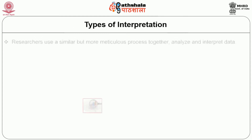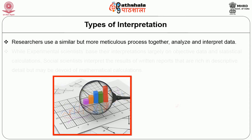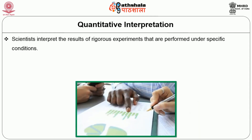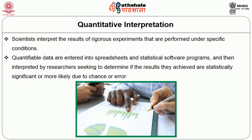Types of interpretation: Researchers use a similar but more meticulous process to gather, analyze and interpret data. While experimental scientists base their interpretation largely on objective data and statistical calculation, social scientists interpret the result of written reports that are rich in descriptive detail but may be devoid of mathematical calculations. Quantitative interpretation: Scientists interpret the result of rigorous experiments that are performed under specific conditions. Quantifiable data are entered into spreadsheets and statistical software programs and then interpreted by researchers seeking to determine if the results they achieved are statistically significant or more likely due to chance or error.